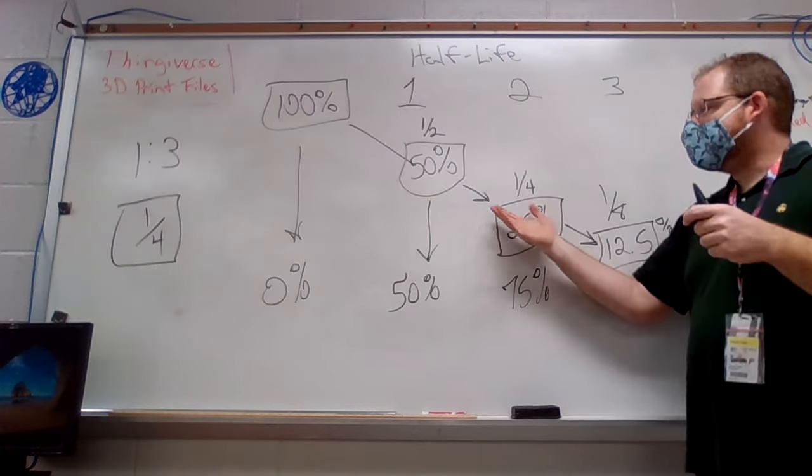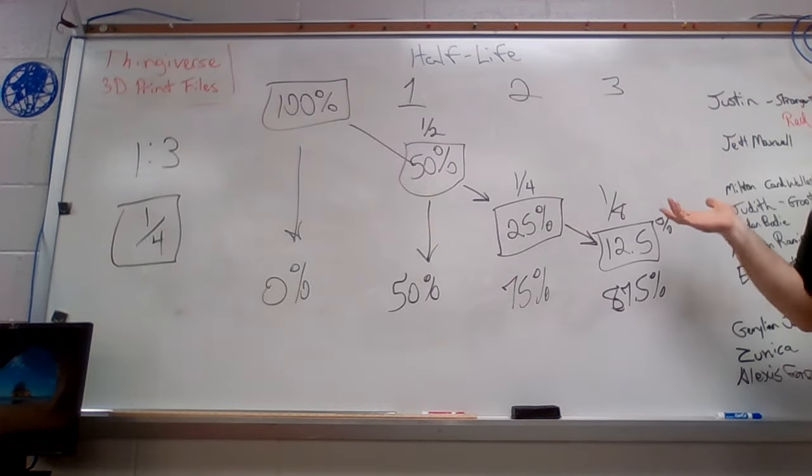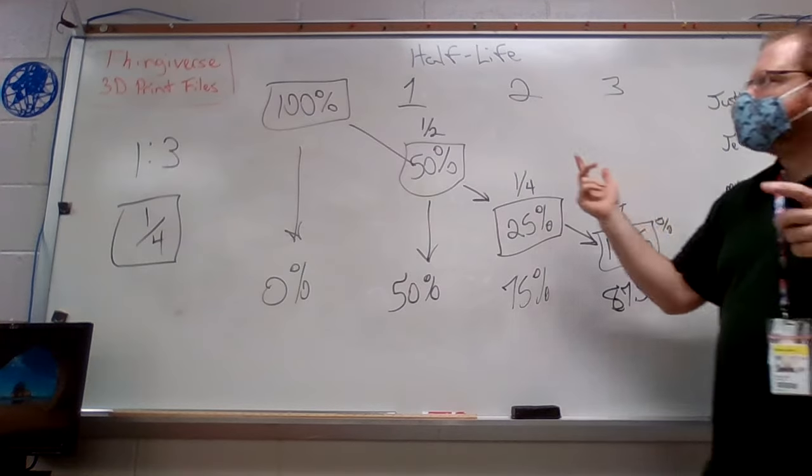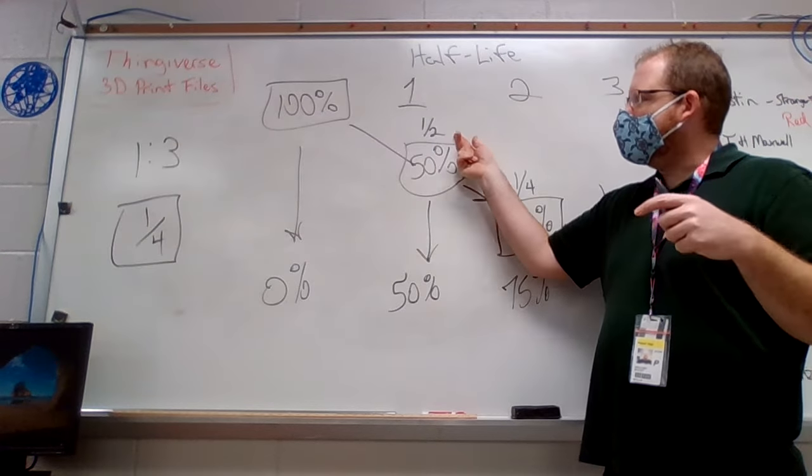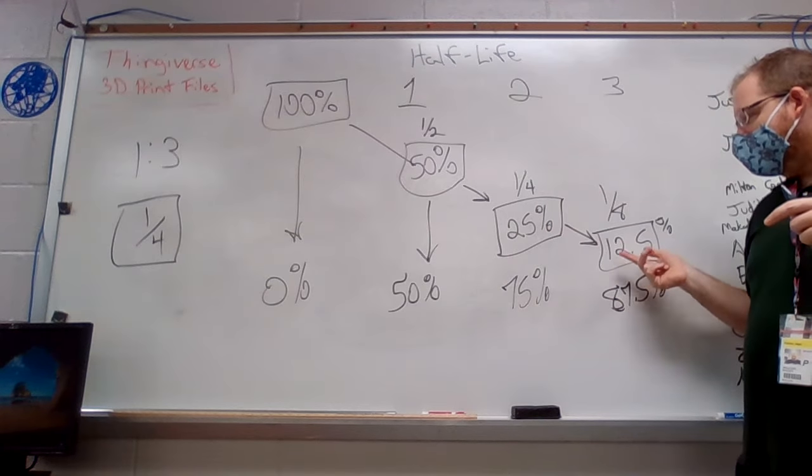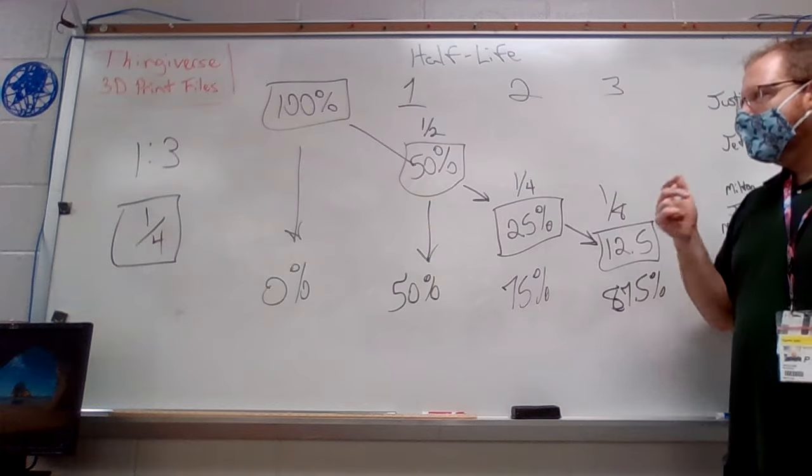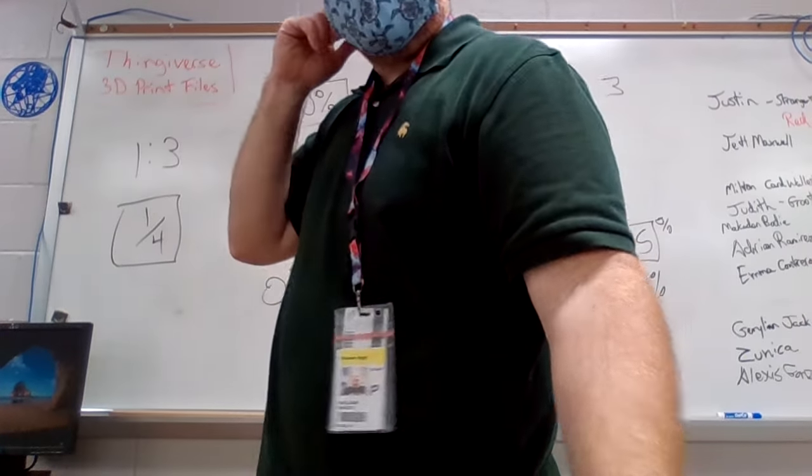So it just keeps getting smaller and smaller and smaller until you only have a couple atoms of radioactive element left. So notice that you can put fractions on these. If I have 50%, that's one half. If I have 25%, that's one quarter. If I have 12.5%, that's one eighth.